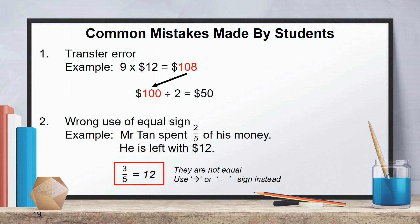Another type is wrong use of equal sign. In this example, Mr. Tan spent two-fifths of his money. He's left with 12 dollars. So after spending two-fifths, Mr. Tan is left with three-fifths. And this three-fifths represents 12 dollars. But the student cannot write three-fifths equal to 12, because three-fifths is basically 0.6, which is not 12. So what they need to use is arrow or use dash to show that this represents a value.